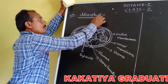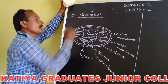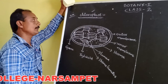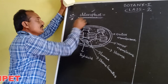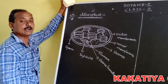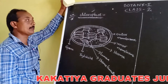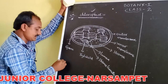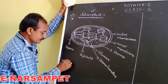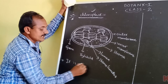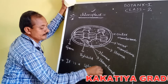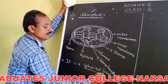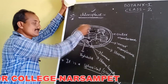Hi students. Today I am discussing the topic of chloroplast. The cell organelle that contains chlorophyll pigments is called a chloroplast. Chloroplast is a spherical, oval, or round-shaped cell organelle.